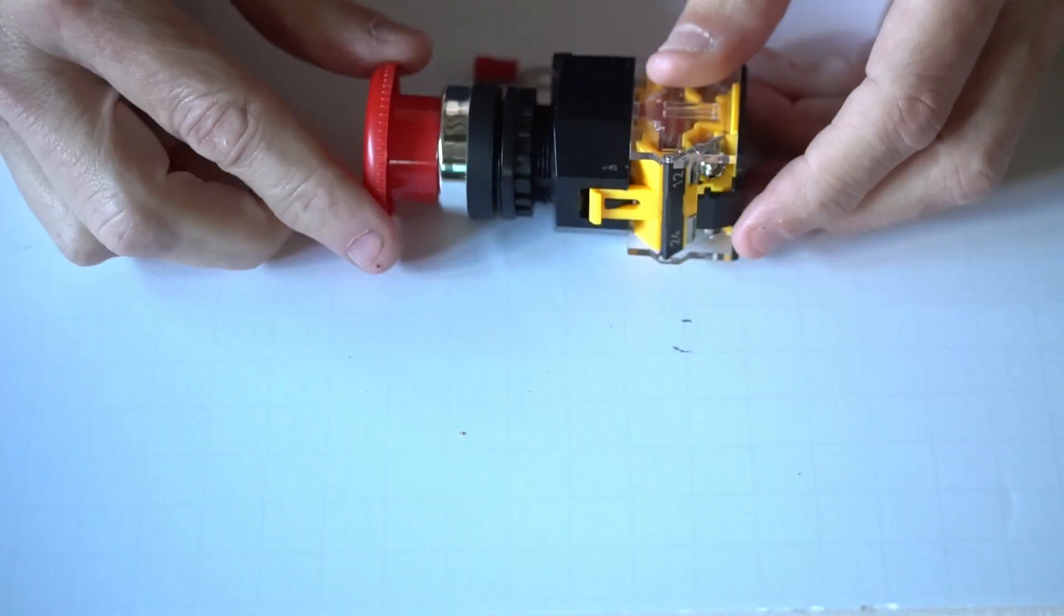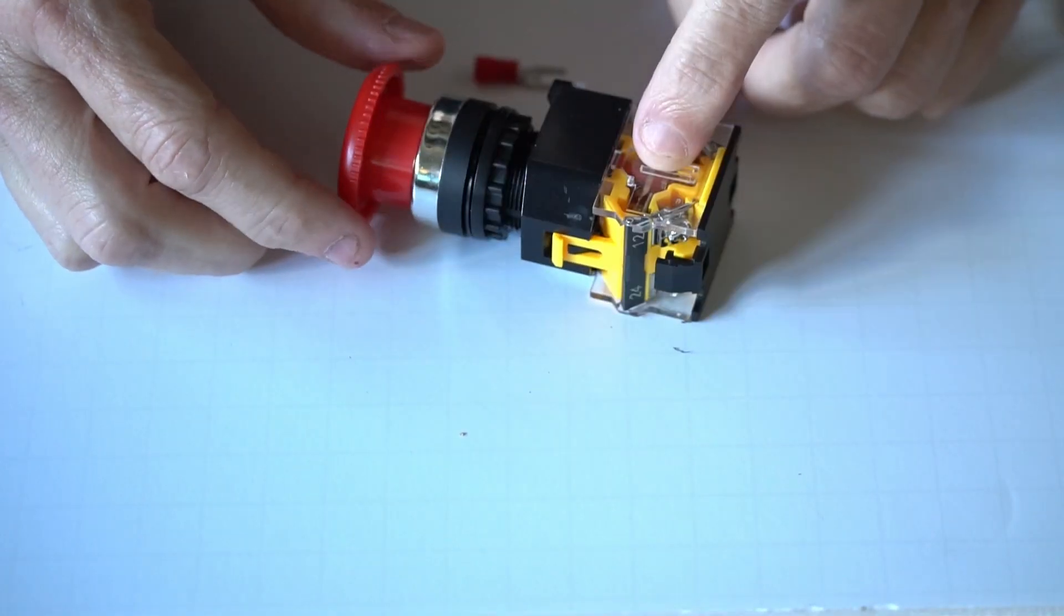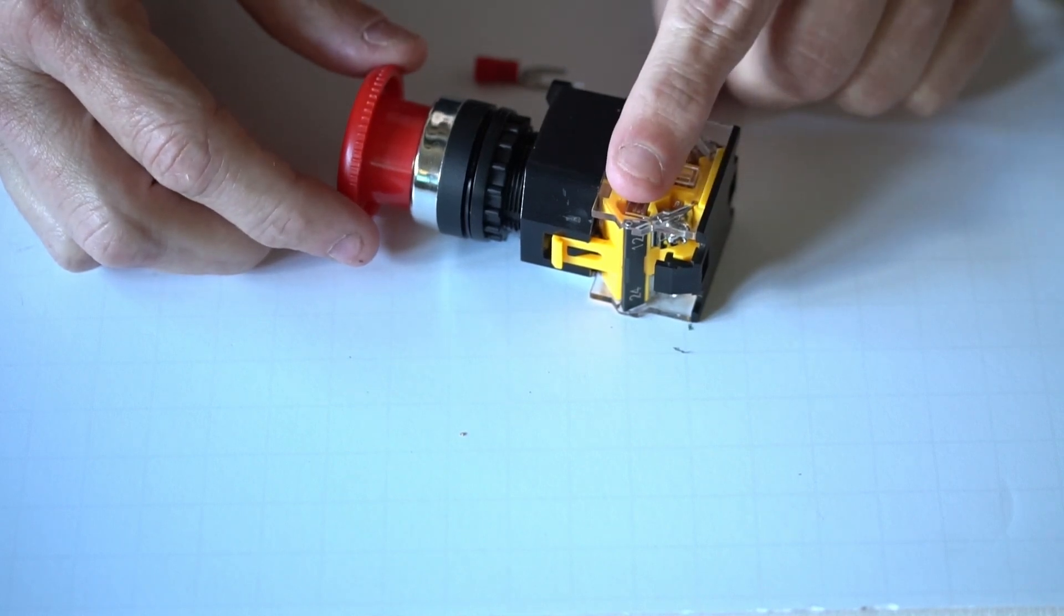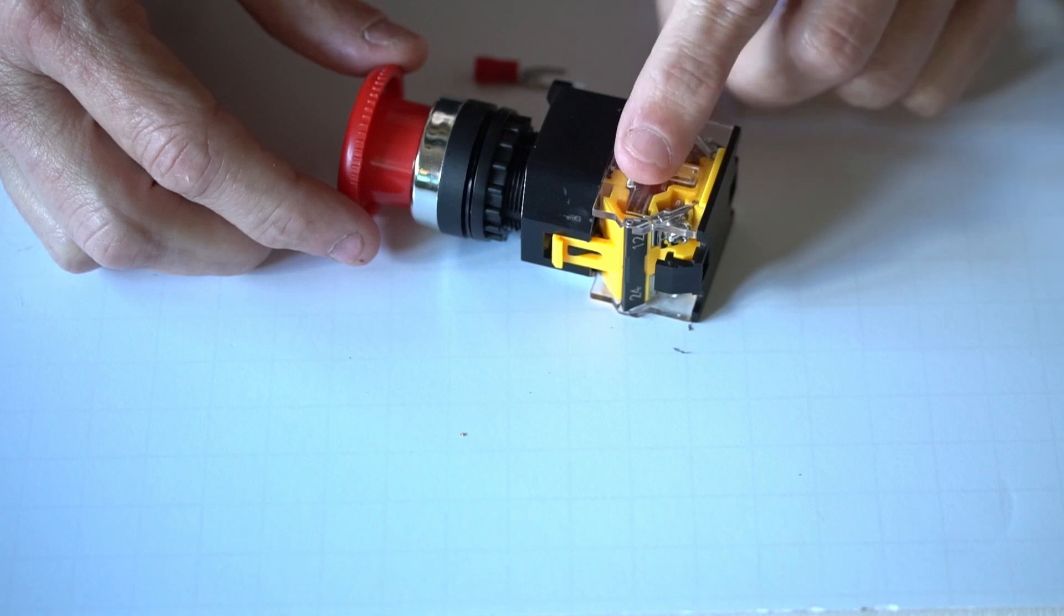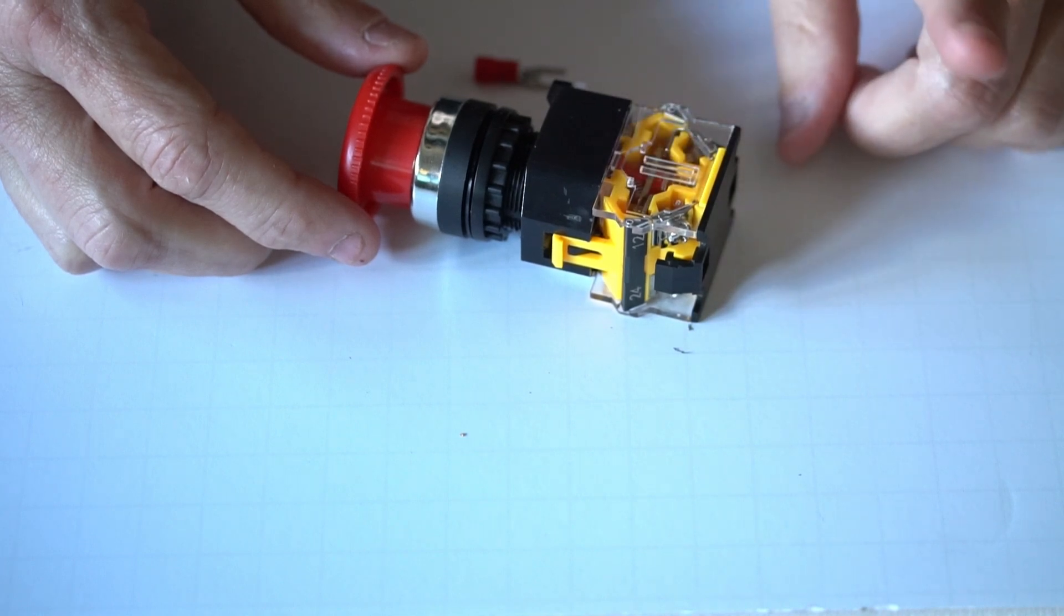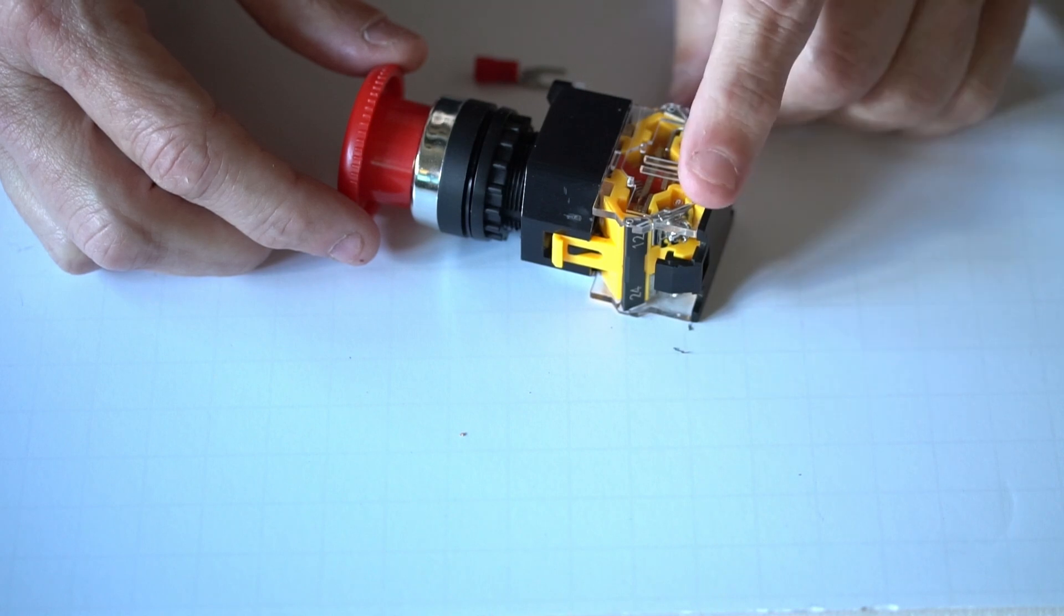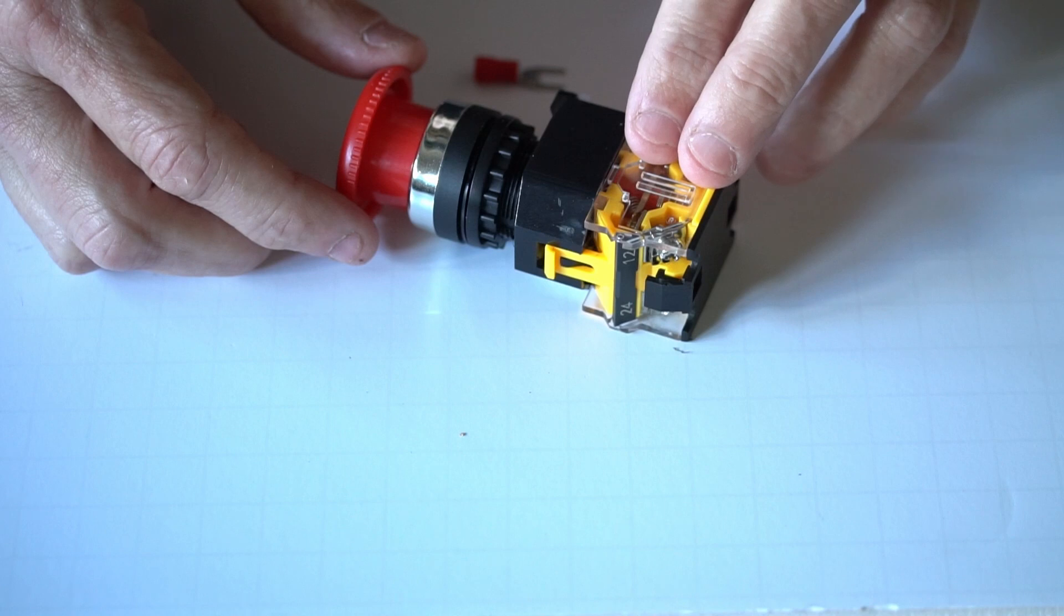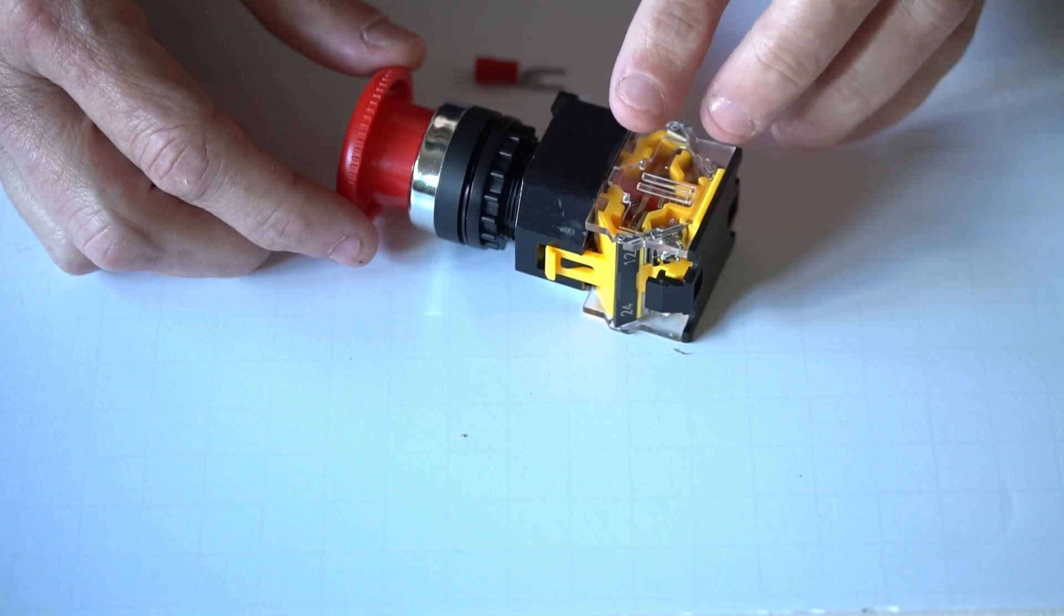I have videos on how to connect e-stop switches to the two controllers that I sell, the Mach 3 USB controller and the POKES 57 CNC full-featured CNC controller. You can see those videos right here in the corner of the screen or there will be a link in the description, or if you're on the product page right now the links will be in the description of the product page. Thank you for watching.